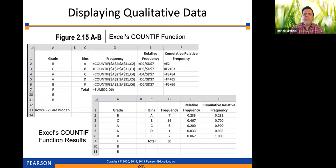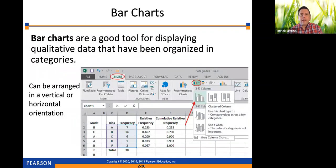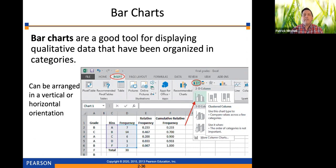Next we have bar charts. Bar charts are very similar to histograms and are a good tool for displaying qualitative data that have been organized in categories. They're going to use the same example, and again they're explaining how to do it in Excel, but it's very easy to do on paper.